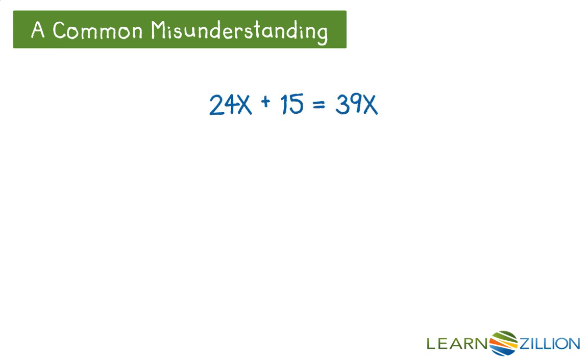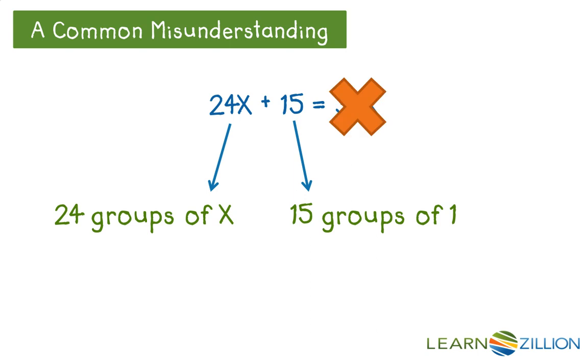One common misunderstanding to make is thinking that unlike terms can be added together. Like in this example, 24x plus 15 equals 39x. To keep from making this mistake, remember that 24x means that you have 24 groups of x, and 15 is 15 groups of 1. Since groups of 1 and groups of x are not the same thing, we can't add them together. So the simplest form the expression can have is 24x plus 15.